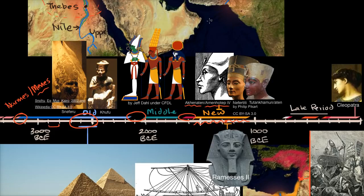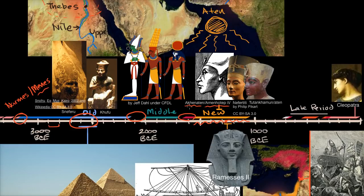Akhenaten decided he wanted to worship one god — Aten, the sun god or sun disk — and actually tried to get rid of evidence of the other gods or make them far less important. This is viewed as perhaps one of the first attempts at monotheism within ancient Egyptian civilization.